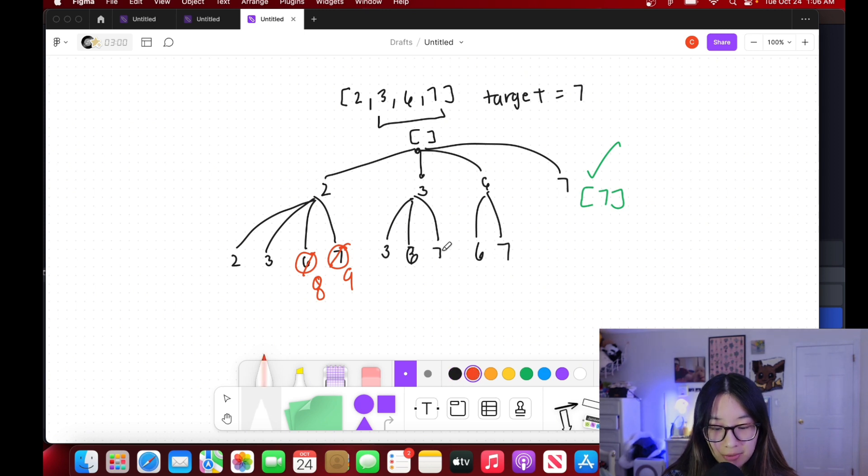Three and 3 gives us 6, so we can continue down that path. This gives us 9, this gives us 10. Six and 6 gives us 12. Six and 7 gives us 13. We don't want to continue down those. So for these three paths we can keep going.